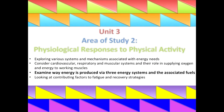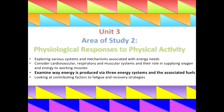This is the Unit 3 Area of Study 2 area we'll be looking at: Physiological Responses to Physical Activity. We'll be looking at point 3, examining ways in which energy is produced by the three energy systems and the associated fuels. The information from today's vodcast is taken from Nelson Physical Education, VCE Units 3 and 4, 5th edition. If you have another textbook that's fine, but if you have Nelson, flip to page 115 and follow along.